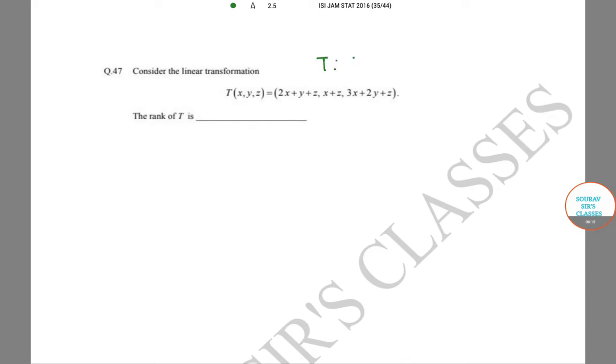So T, if written as a matrix, is [2,1,1; 1,0,1; 3,2,1]. We know that rank is equal to column rank, so we will try to find out the column rank.